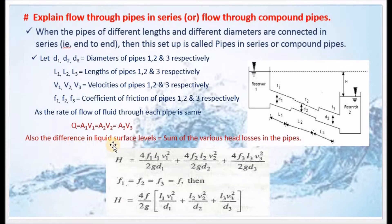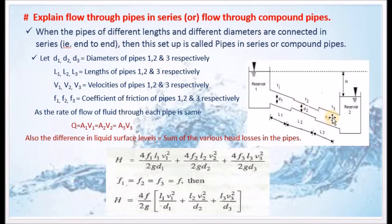Also, the difference in liquid surface levels is equal to the sum of the various head losses in the pipes. The liquid surface level difference represents the pressure head drop. The pressure head drop equals the friction head loss — summed across the first pipe, second pipe, and third pipe. The friction head loss for each pipe is 4F·L·V² divided by 2g·D.